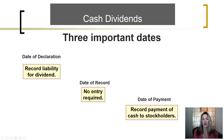On the date of record, there is no entry required. The only thing that occurs on the date of record is the corporation identifies who owns the stock, to identify who will receive the cash dividend payment. Nothing is needed to be recorded in the general ledger.